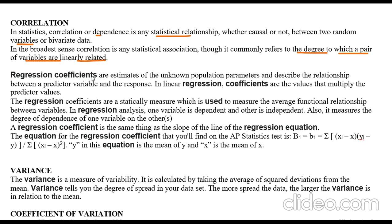The second option is regression coefficient. Regression coefficients are estimates of unknown population parameters and they describe the relationship between a predictor variable and the response — what kind of relationship exists between two variables. In linear regression, coefficients are the values that multiply the predictor values. They measure the average functional relationship between two variables, where one variable is dependent and the other is independent.